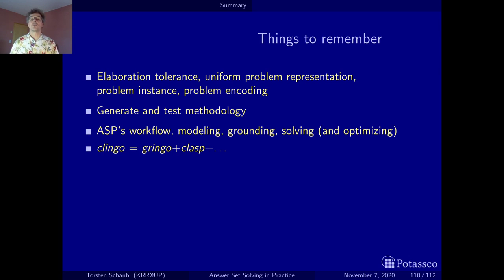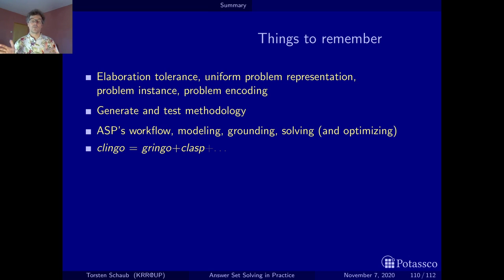One thing that is important, I think, is this notion of elaboration tolerance, which I think becomes more and more clear once you work with ASP. One thing that results from this are uniform problem representations that distinguish the problem instance and the problem encoding, and that the problem encoding should actually work for all problem instances of the problem class.